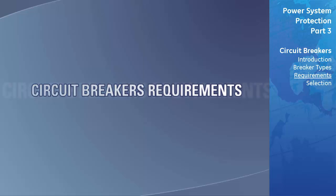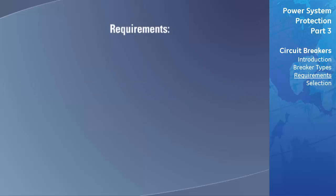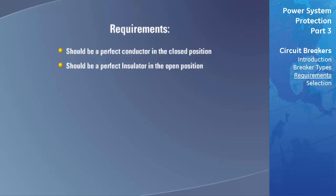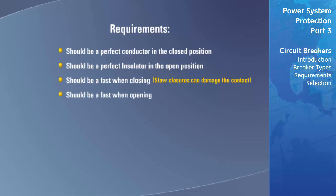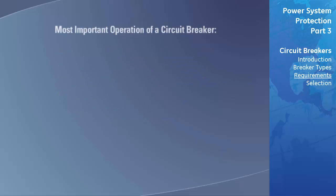The requirements for a circuit breaker are as follows: it should be a perfect conductor in the closed position, a perfect insulator in the open position, fast when closing — since current starts flowing before the contacts touch and slow closures can damage them — and fast when opening, but it must not extinguish the current before its zero crossing and must not produce overvoltages.